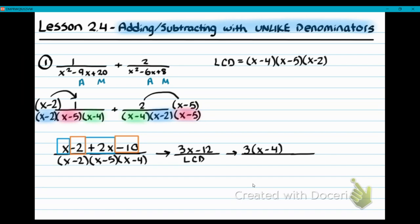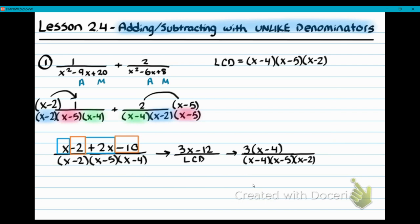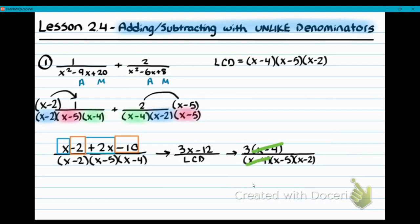We just want to cross off any factors that are matching. Our LCD was X minus four, X minus five, and X minus two. We factored the numerator; the denominator is already factored. X minus four in the numerator and X minus four in the denominator cancel. You multiply everything left on top, which is just a 3, and the two factors left on the bottom are X minus five and X minus two — that is your final answer.